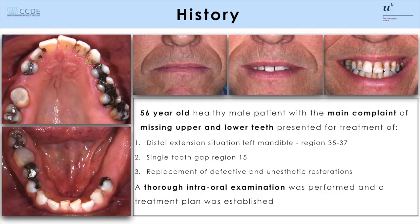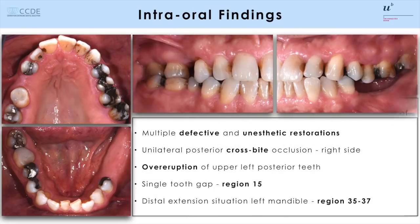The patient is a 56-year-old healthy non-smoking male and he has several main complaints. That includes lots of old, non-satisfactory fillings and restorations, a distal extension situation in the left mandible and a single tooth gap in the right maxilla. These intraoral pictures show the defective and anesthetic restorations, a cross-bite on the right side and an over-eruption of the upper left posterior teeth.